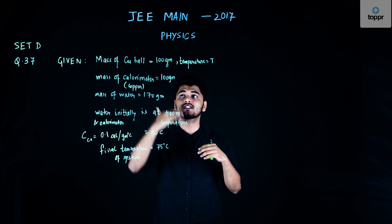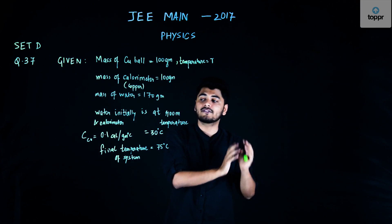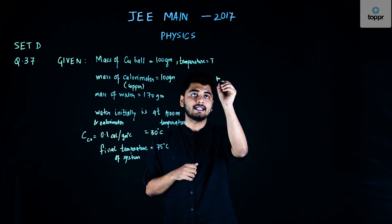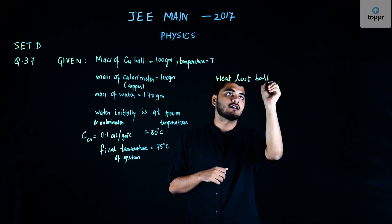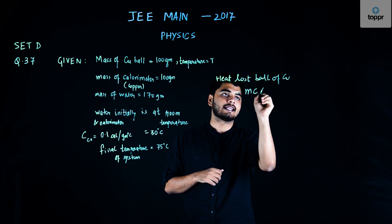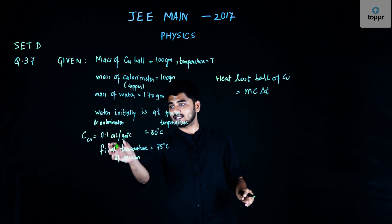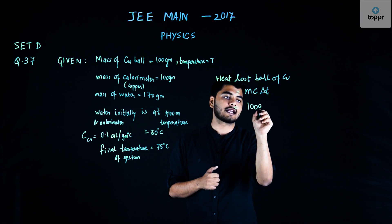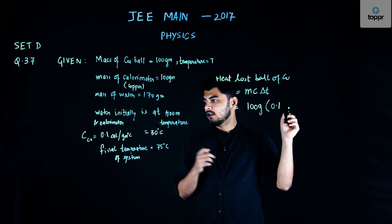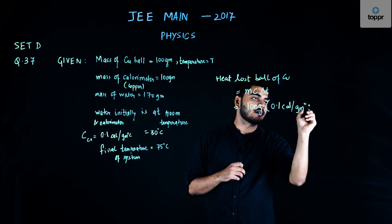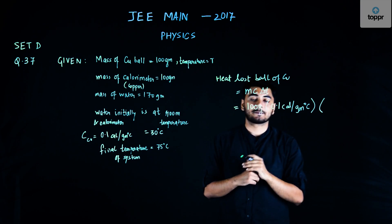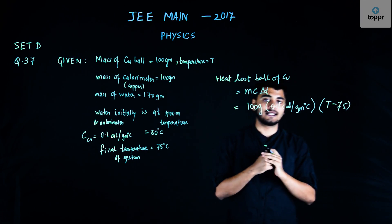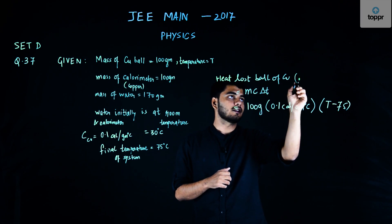The heat lost by the copper ball equals m·c·ΔT. The mass of copper is 100 grams, and the specific heat of copper is 0.1 calories per gram per degree Celsius. The ball was initially at temperature T and finally at 75 degrees Celsius, so ΔT = T − 75. This gives us the heat lost by the copper ball — this is equation one.